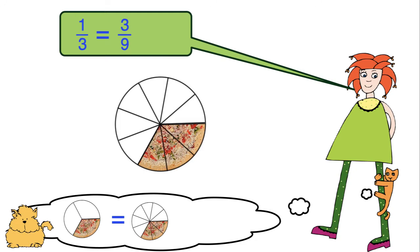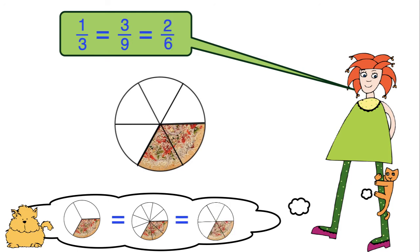Those pieces seem a little small, so perhaps we would rather cut each slice in half, giving us two-sixths of a pizza. Well, it doesn't matter what we call it. One-third, three-ninths, or two-sixths—all of the fractions are equivalent. We still have one-third of the pizza left.